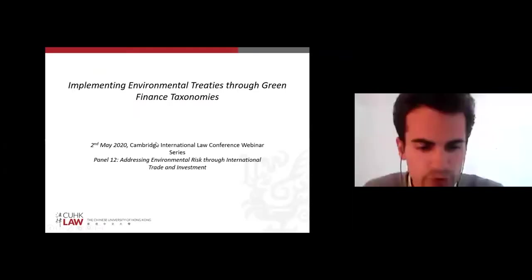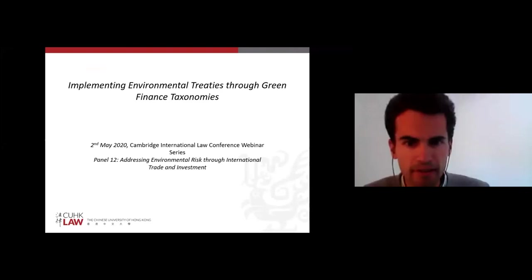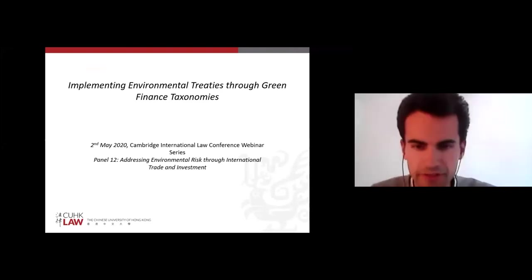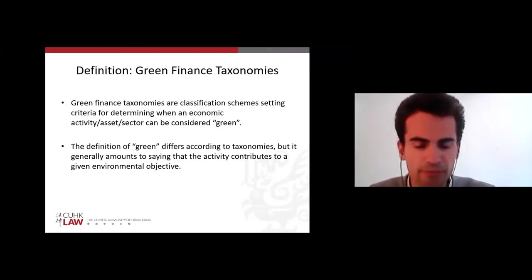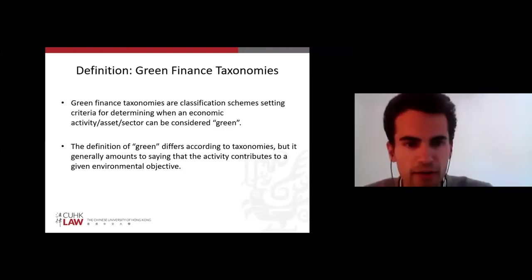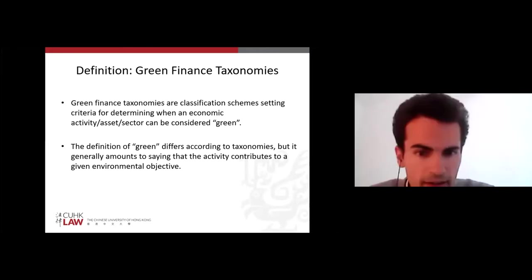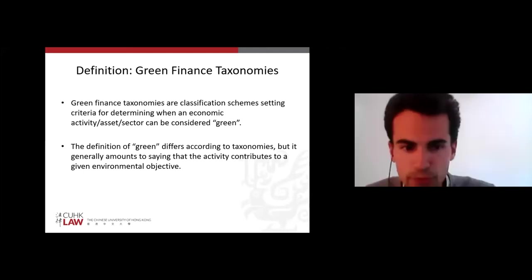I'm going to explore how green finance taxonomies can be seen as a way to implement environmental treaties. Green finance taxonomies are classification schemes that set criteria for determining when an economic activity, asset, or sector can be considered green. The definition of green differs according to taxonomies, but it generally amounts to saying that the activity contributes to a given environmental objective.